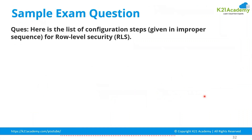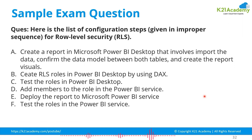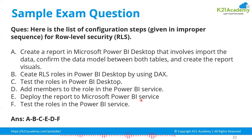A drag-and-drop sample question presents RLS configuration steps in an improper sequence that you must reorder correctly. The correct sequence is: first, create a report in Microsoft Power BI; then create row-level security using DAX; then test the roles in Power BI Desktop; then deploy the report to Power BI Service; test the roles again in Power BI Service; and finally add members to the role in Power BI Service.